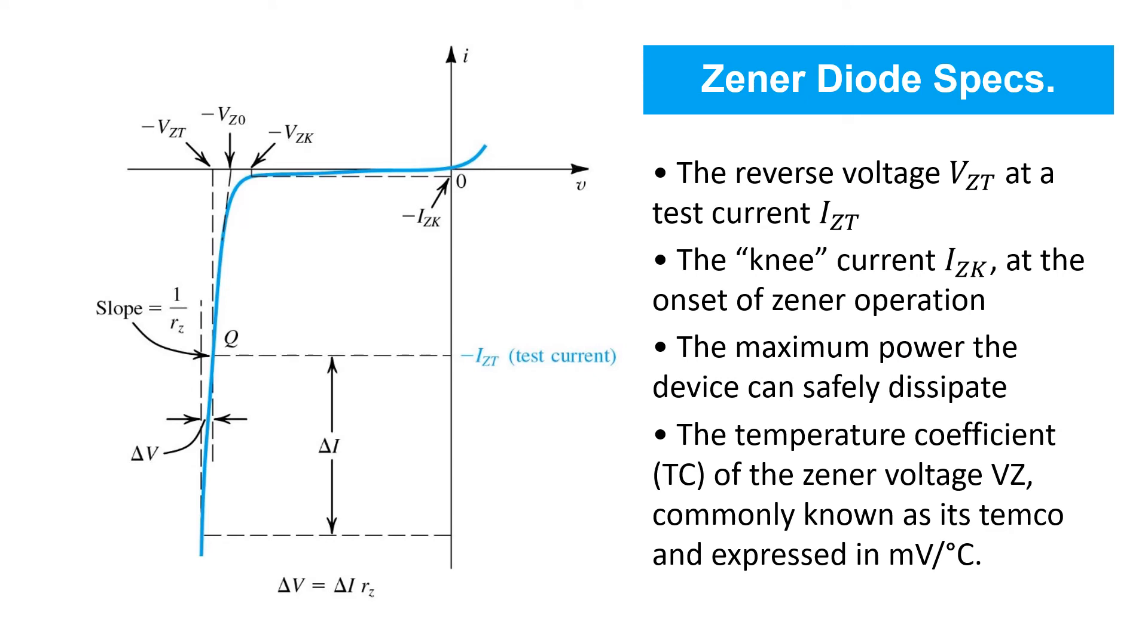When selecting a zener diode for use in a particular application, several key specifications should be referred to on the datasheet. Usually shown there is the reverse voltage that will arise at a specified test current. So for example, you may be specified a 6-volt zener diode at 1 milliamp current, which would specify one point on this portion of the curve.